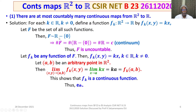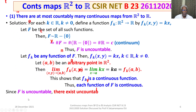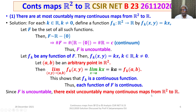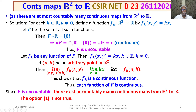So each function of F is continuous. Since F is uncountable, there exist uncountably many continuous maps from R square to R. Thus option 1 is not true — it claims at most countably many, but we have an uncountable set of continuous maps from R square to R.